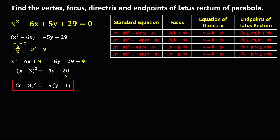Take note that we only need three values to find the vertex, focus, directrix, and endpoints of the latus rectum: the value for h, the value for k, and the value for p. We can find h from x and k from y. From this standard equation, to solve for h: since h comes from x, this term gives h, and we always take the opposite sign. Since this is negative 3, h is positive 3. For k from y, since this is positive 4, k is negative 4.